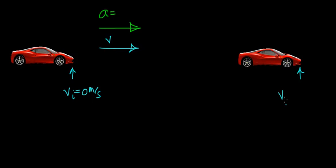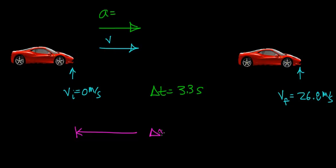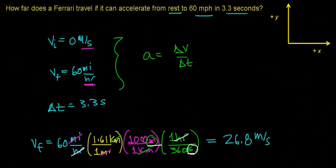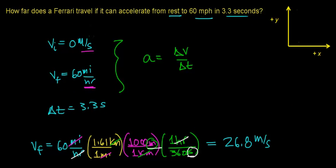Now I'd like to use this information and draw a picture of what's going on. The Ferrari starts with an initial velocity of 0 meters per second — the car is at rest. The car accelerates in the positive x direction, and the velocity vector points in the same direction as acceleration, indicating the velocity is increasing. The car reaches a final velocity of 26.8 meters per second in 3.3 seconds. We're looking for the distance this car travels during that 3.3-second interval.